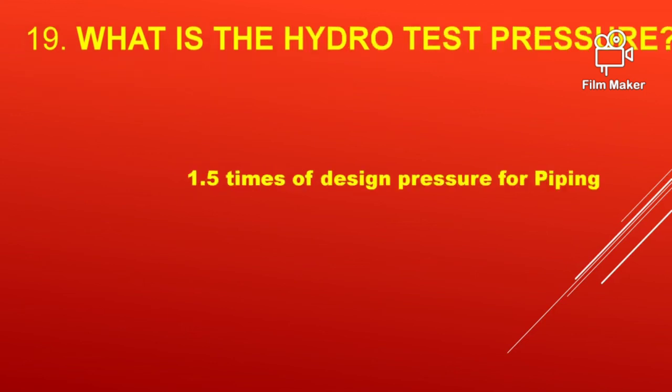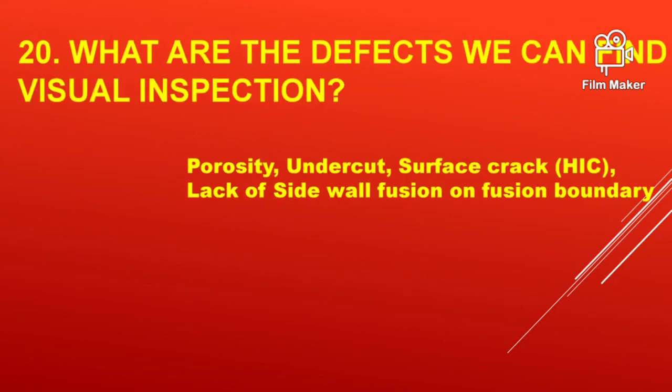What is the hydrotest pressure? That is 1.5 times the design pressure for piping. What are the defects we can find by visual inspection? Porosity, undercut, surface crack, lack of sidewall fusion and fusion boundary.